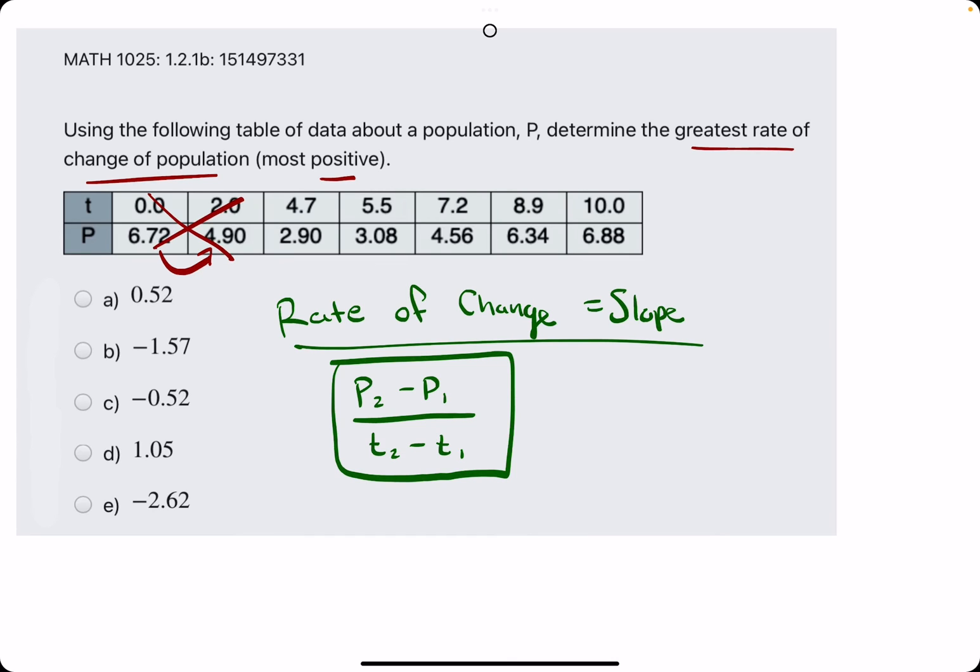So then from here to here there's a decrease in the P value, so we do not need to find the slope between these two points. So we're ignoring these.